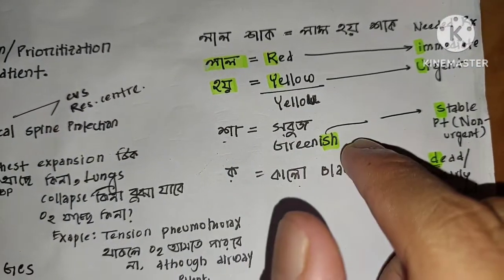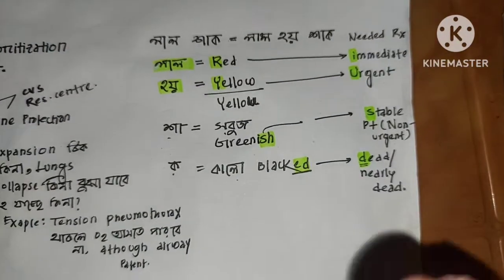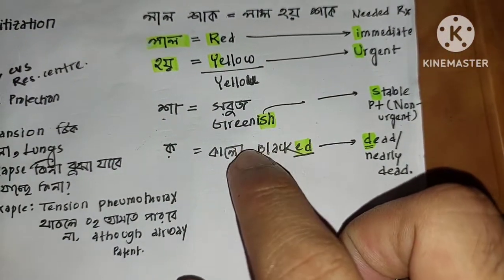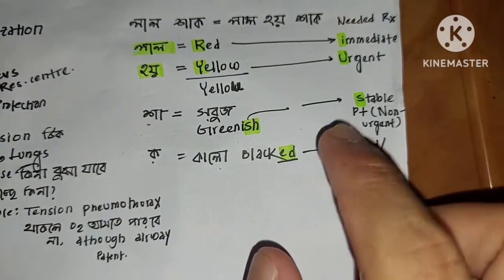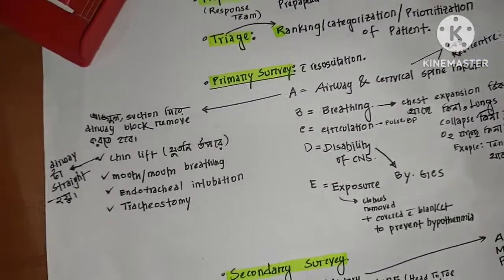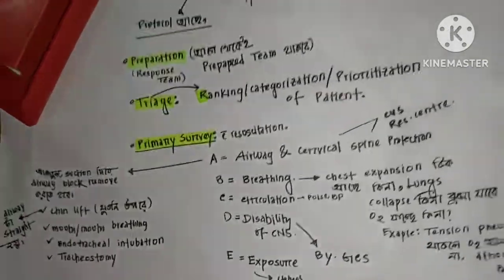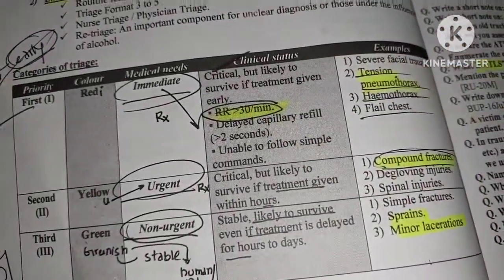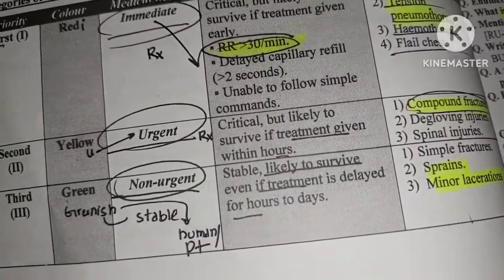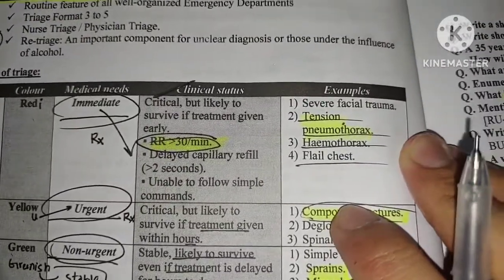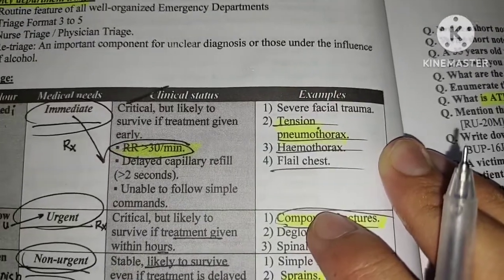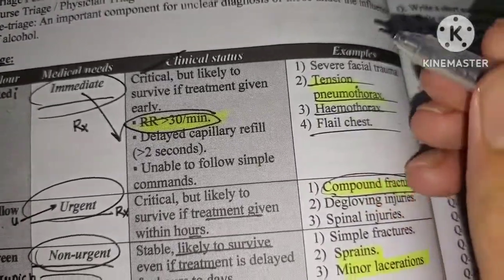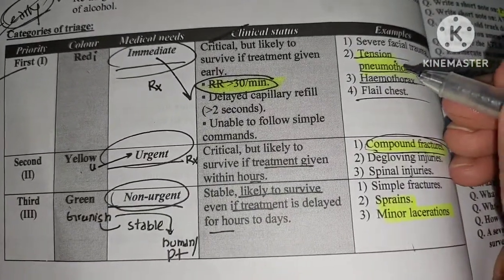Green indicates a stable patient. Black is the last category — it means the patient is deceased or beyond help. So we have four categorizations: red for immediate help, yellow for urgent, green for delayed help, and black for expectant or deceased.